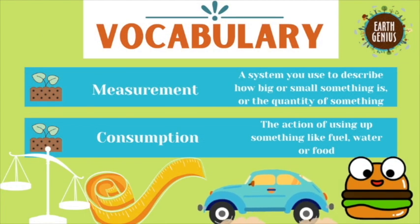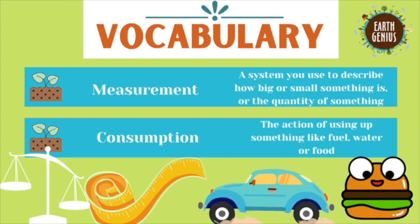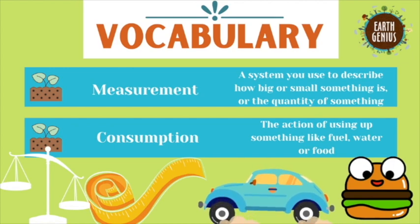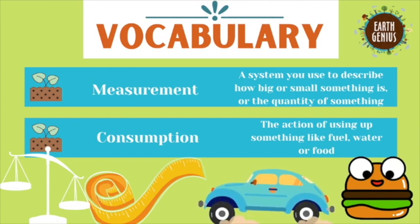Here are your vocab words for today. Pause the screen and write these words and the definitions down in your garden journals, or just repeat the words out loud after me. Our first word is measurement. It contains the word measure and is written as an amount. For example, you need two cups of flour to make brownies.